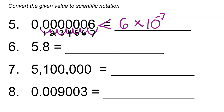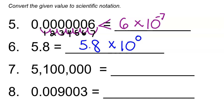Now that we've done a few of these, they get a lot easier. Next we have 5.8. Since 5.8 is already between 1 and 10, we don't need to move the decimal point at all. We keep 5.8 times 10, and since we move the decimal point zero times, the power is 0. So 5.8 times 10 to the 0th power. Anything to the 0th power is 1, so this is essentially 5.8 times 1. In this case, scientific notation is actually more work, but we can still write it this way.